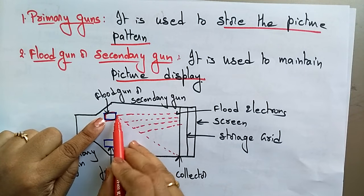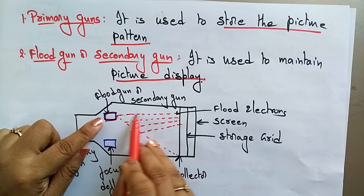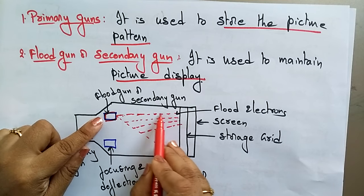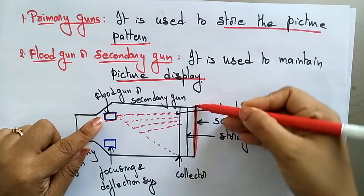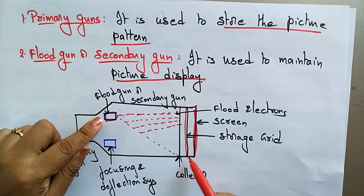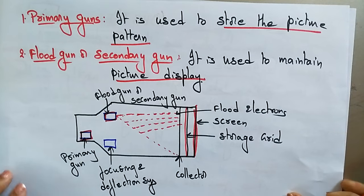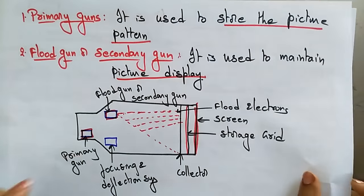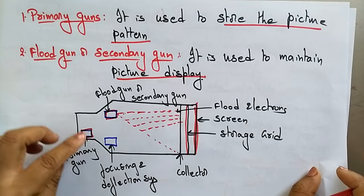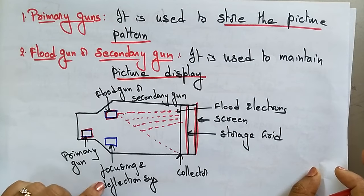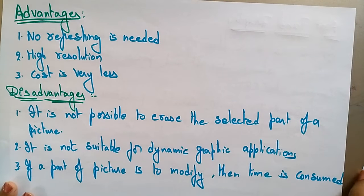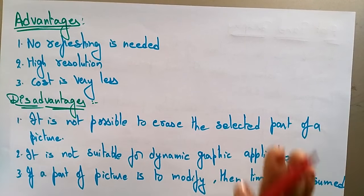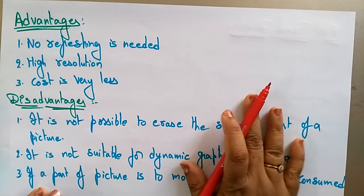The flood gun or secondary gun ejects flood electrons toward the screen. There is also a storage grid present. These are the two types of guns: one is the primary gun and the other is the flood gun. Additionally, a focusing and deflection system is present in the DVST.